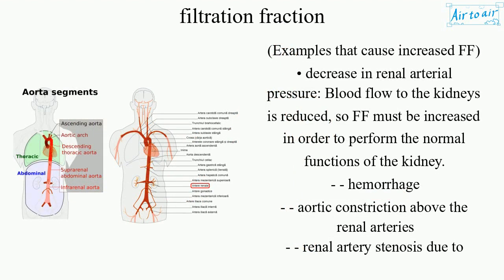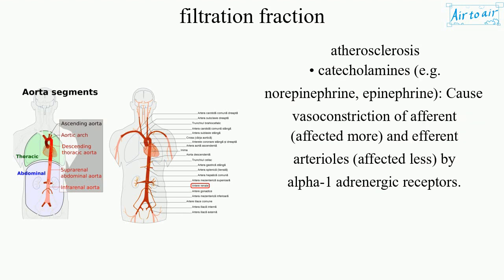Examples that cause increased FF: decrease in renal arterial pressure — blood flow to the kidneys is reduced, so FF must be increased in order to perform the normal functions of the kidney. Atherosclerosis and catecholamines (e.g., norepinephrine, epinephrine) cause vasoconstriction of the afferent arteriole (affected more) and efferent arteriole (affected less) via alpha-1 adrenergic receptors.